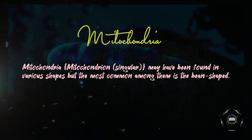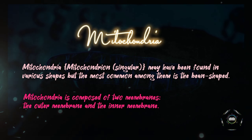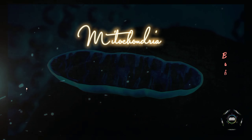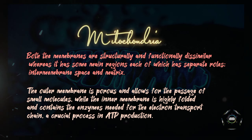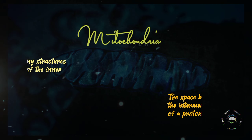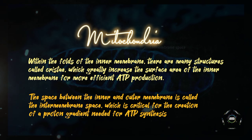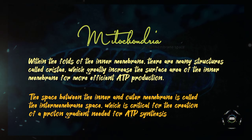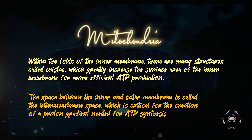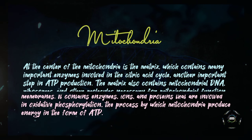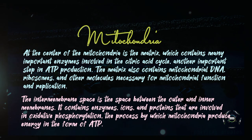These tiny organelles are enclosed within a double membrane structure, with an inner and outer membrane. The inner membrane is highly folded and contains numerous protein complexes that are critical for energy production through a process called oxidative phosphorylation. The outer mitochondrial membrane is the first layer that surrounds the entire organelle, and the intermembrane space is the space between the outer and inner mitochondrial membranes.